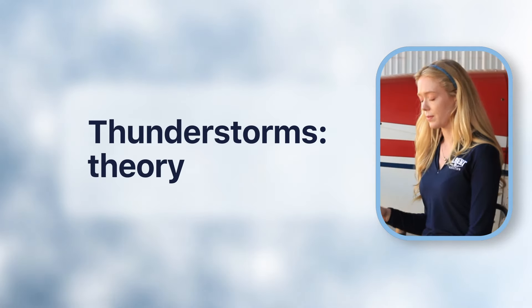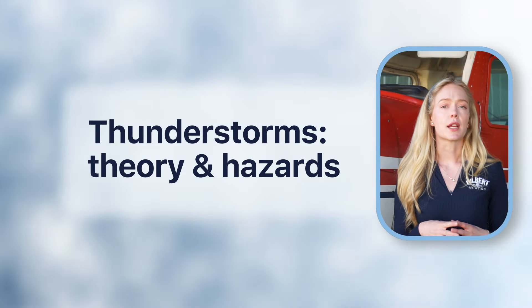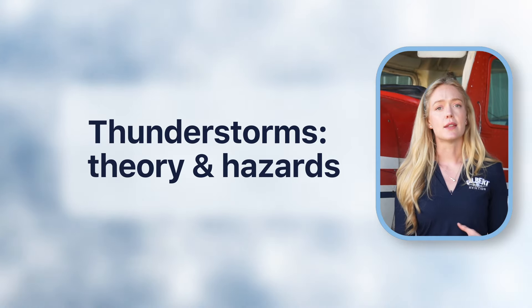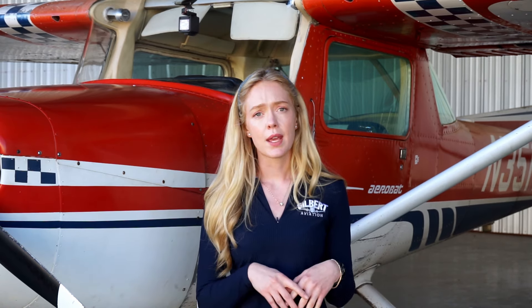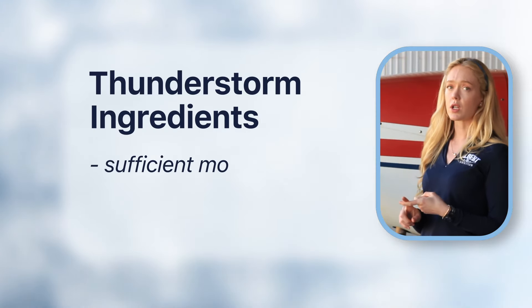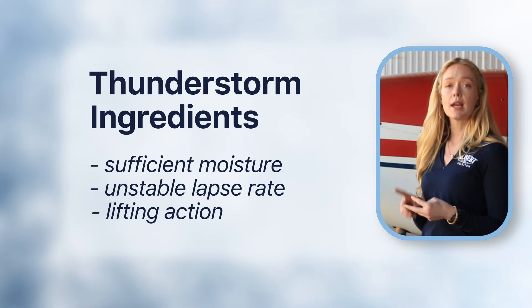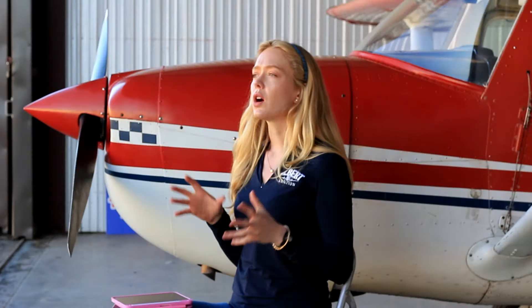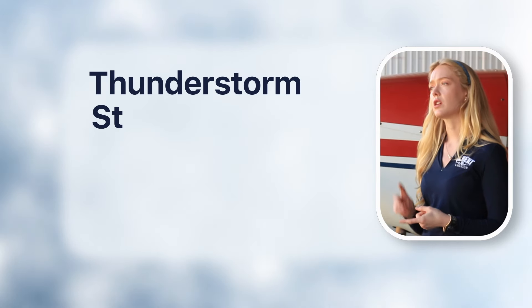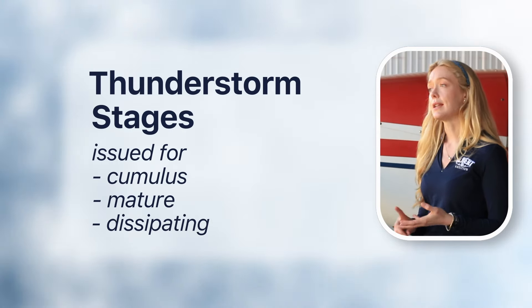Finally, the last topic that will absolutely be on your checkride is thunderstorms. Every pilot needs to understand the theory about how they develop and the danger that they pose. There are three key ingredients for a thunderstorm to form: sufficient moisture, unstable lapse rate, and lifting action. There are also three stages of a thunderstorm: cumulus, mature, and dissipating.